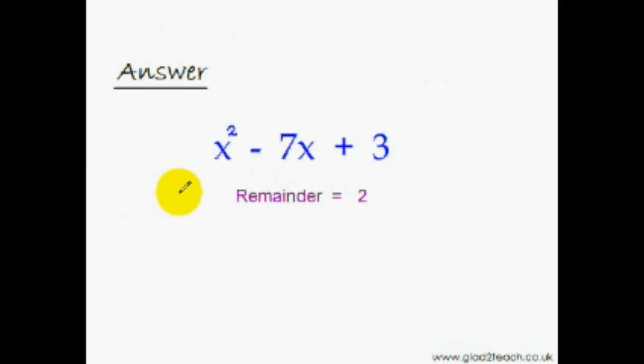Your time is up. The correct answer is x square minus 7x plus 3 and the remainder is 2. So could you get it?